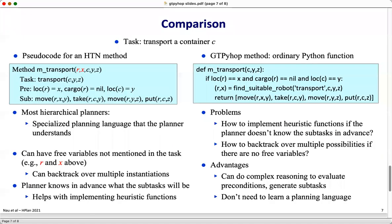Here's a comparison between GTPyHop and some techniques used in some other hierarchical planners. I'm going to use as an example the task of transporting a container c from one location y to another location z.